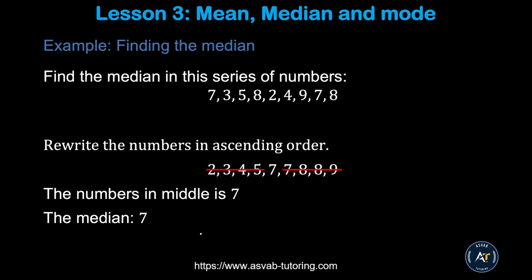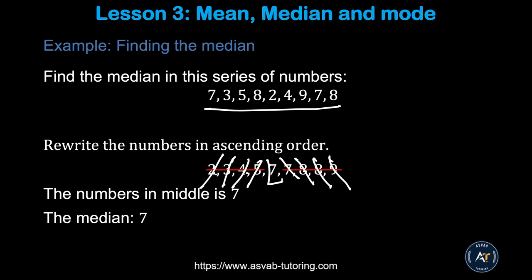The next topic is Median — how to find the median. Median is the mid value of a series of numbers. If you want to find a median, the first thing you have to do is write the numbers in ascending or descending order — that means greatest to smallest or smallest to greatest. Here we wrote smallest to greatest: 2, 3, 4, 5, 7, 7, 8, 8, 9. Cross out from the first and last, working inward. The middle number is the median — so the median is 7 here.